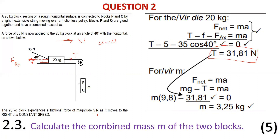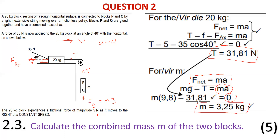Once tension is found, apply Newton's second law to the P and Q system. Tension acts upward on the string; gravitational force mg acts downward. Since acceleration is zero: mg minus tension equals zero. Solving gives the combined mass of P and Q as approximately 3.25 kg. Five-mark question done.